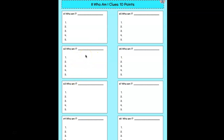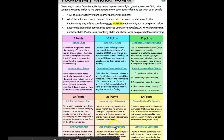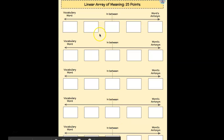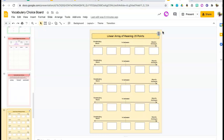The same thing is going to happen if I click on linear arrays of meaning. We're looking at this: here is the vocabulary word, what is its meaning, and then the word's antonym — the opposite of the word. These get more complicated and more complex the farther that you work in this.